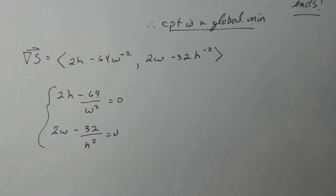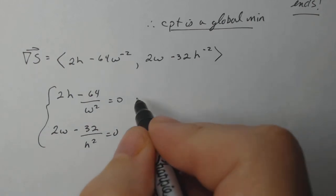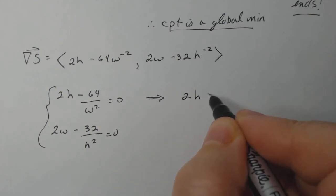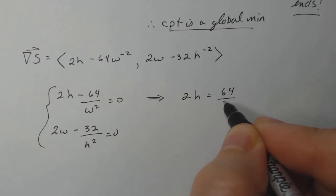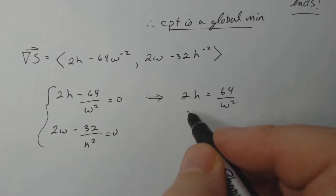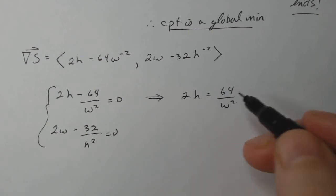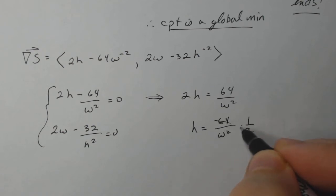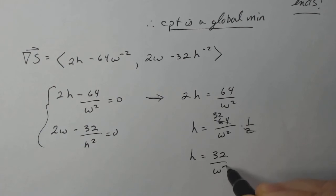This isn't easy to do elimination because of where the variables are in the numerator and denominator. So we're going to use substitution. Let's take this guy and solve for H. 2H is equal to 64 over W squared. Divide everything by two. So H equals 64 over W squared times one half. That leaves me with 32. So H is equal to 32 over W squared.